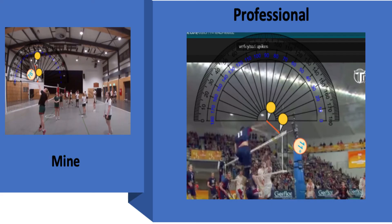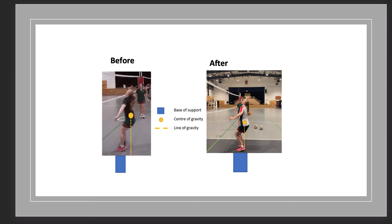Another alteration to my volleyball hit is to decrease the angle of release. Between me and the professional, there is a massive 68-degree difference. This means that I need to use less vertical velocity and maximise my horizontal velocity, relying on gravity to bring the ball down. Through implementing my biomechanical modification, there was a change in my volleyball hit, making it more effective.